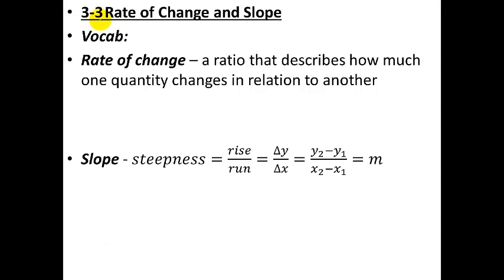Moving right along with Chapter 3, we're going to look at slope and rate of change in this video. A couple of vocab terms and we'll get right to it. First is rate of change. This is something you might have learned last year in pre-algebra, but if not, no big deal. It's a ratio that describes how much one quantity changes in relation to another.